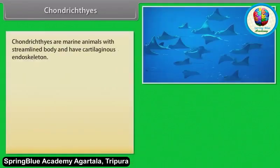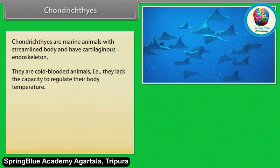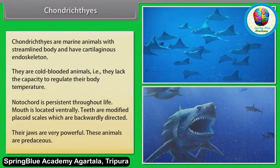Chondrichthyes are marine animals with streamlined body and have cartilaginous endoskeleton. They are cold-blooded animals — that is, they lack the capacity to regulate their body temperature. Notochord is persistent throughout life. Mouth is located ventrally. Teeth are modified placoid scales, which are backwardly directed. Their jaws are very powerful. These animals are predaceous.